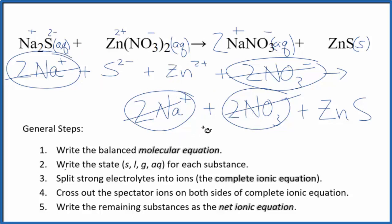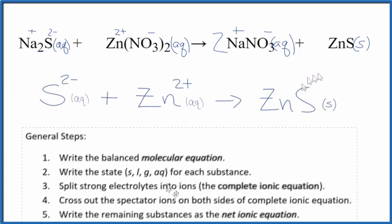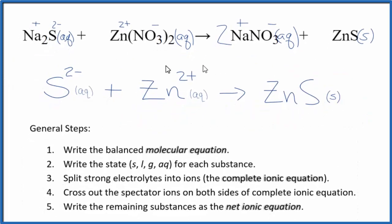I'll clean this up and add the states. We'll have our net ionic equation. So this is our net ionic equation for sodium sulfide plus zinc nitrate. You'll notice that charge is conserved. We have 2 minus and 2 plus. That balances out. We have a neutral compound.